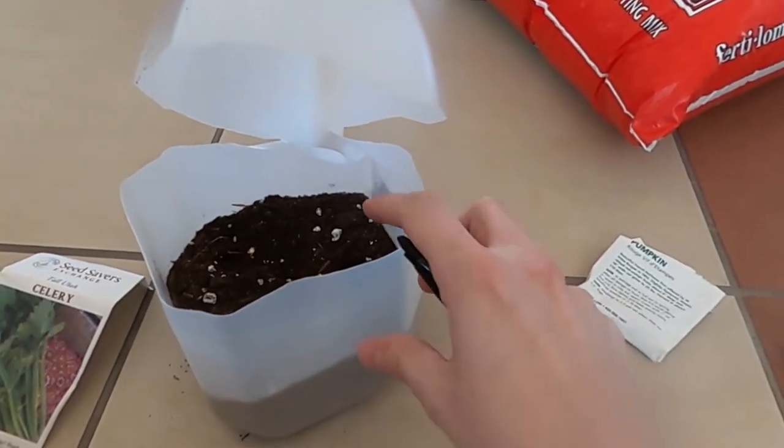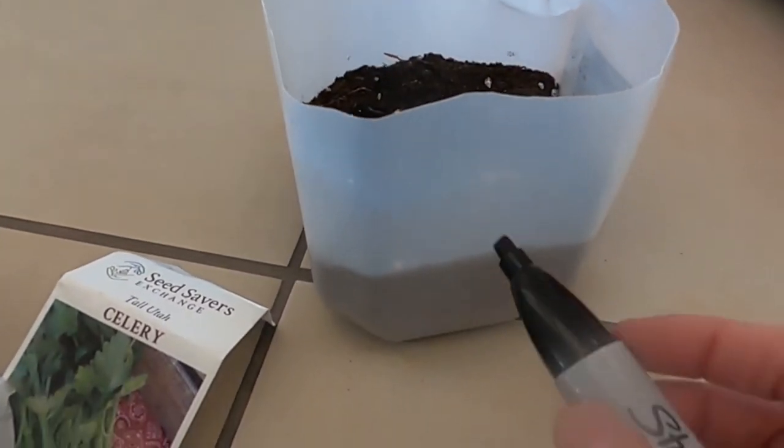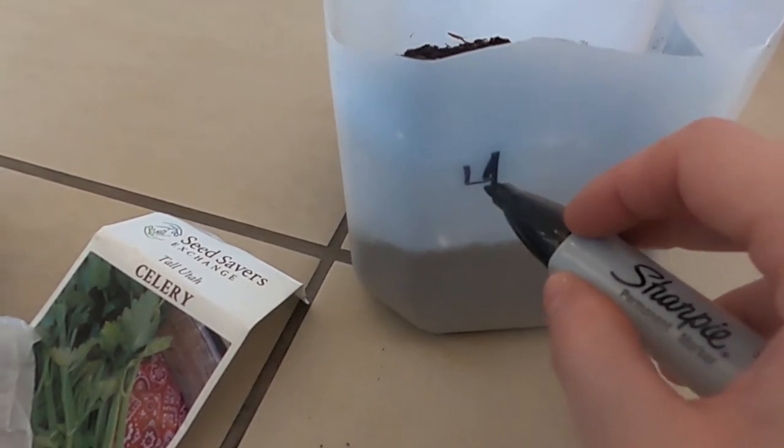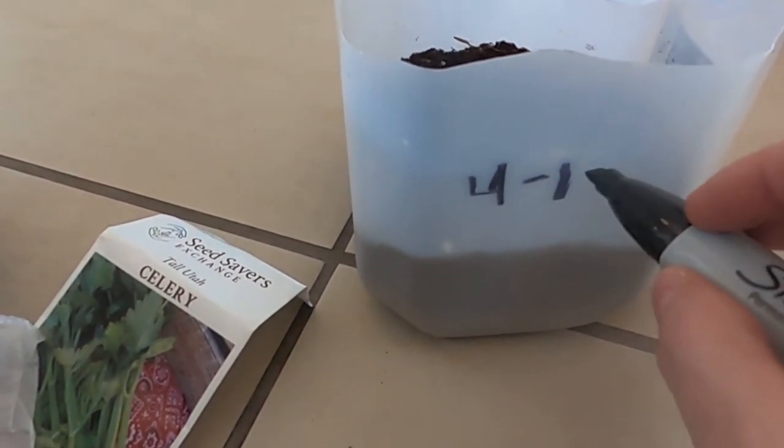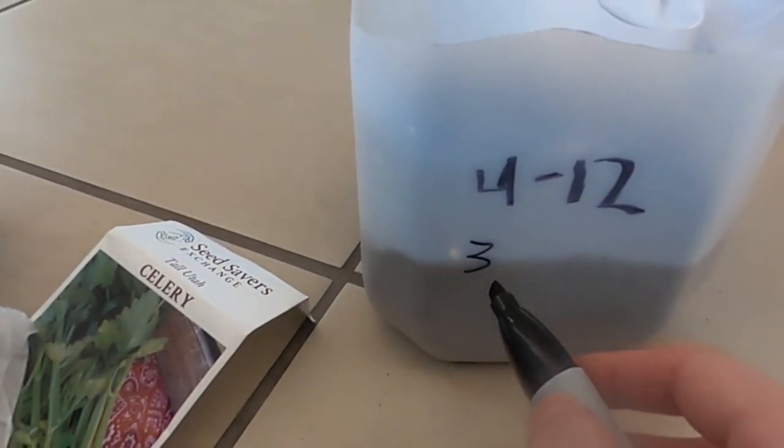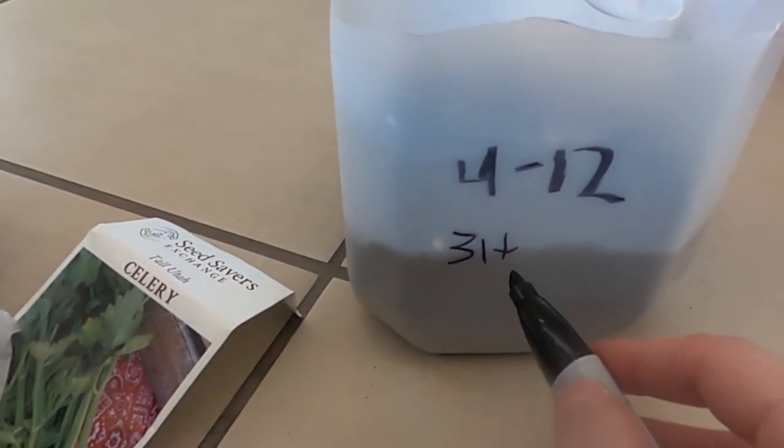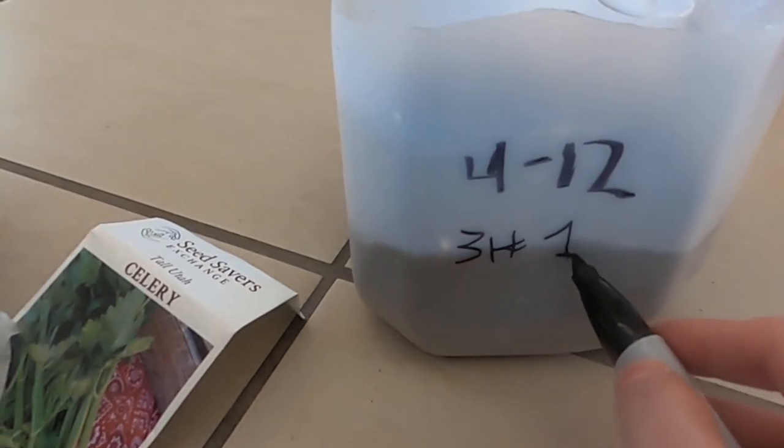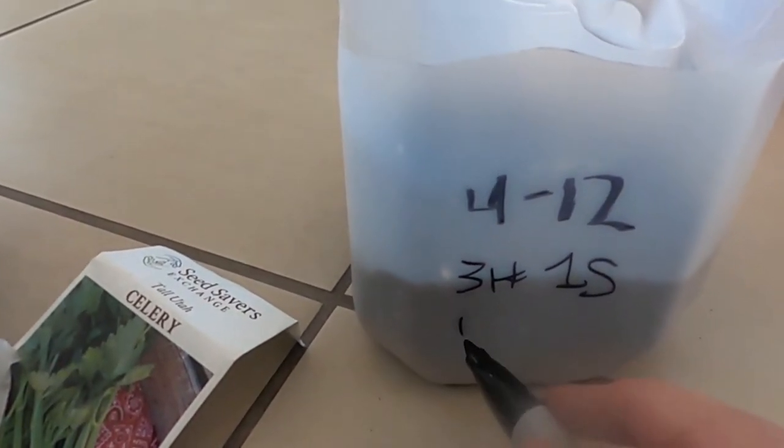On this jug, I haven't yet written what I've planted. So I'm just going to quickly write the date. It's April 12th and I have three holes with one seed each and this is pumpkin.